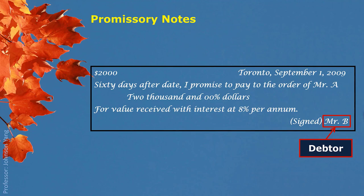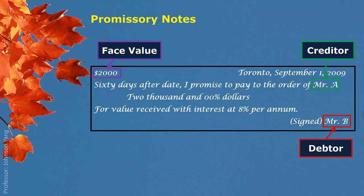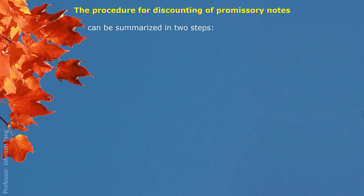Mr. B is the debtor in this case. Mr. A is the creditor who lent money out to Mr. B. The quantity of money mentioned is called the face value of the promissory note — $2,000 — and it carries a term of 60 days after the issue date of September 1, 2009. The interest rate is also mentioned. For a promissory note, if no compounding situation is mentioned, the interest rate is considered simple interest.